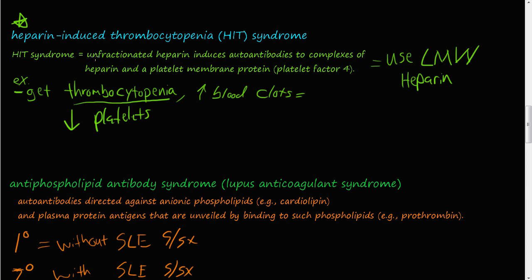HIT syndrome is when unfractioned heparin creates or induces autoantibodies to the complexes of heparin and a platelet membrane protein, also known as platelet factor 4. For some reason, the immune system targets heparin when it is bound to this platelet membrane protein. So what you do is switch their medications to low molecular weight heparin, and that should take care of it — there are several drugs that are low molecular weight heparins.